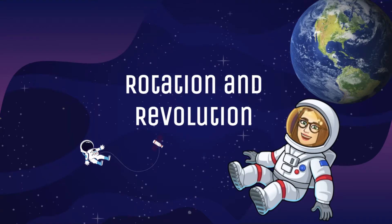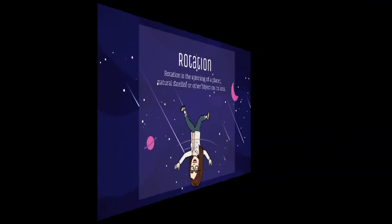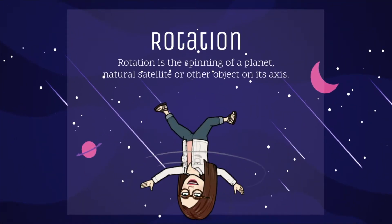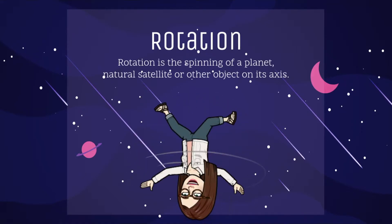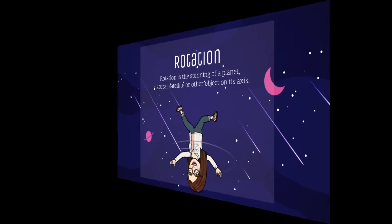Rotation and revolution. Rotation is the spinning of a planet, natural satellite, or other object on its axis.